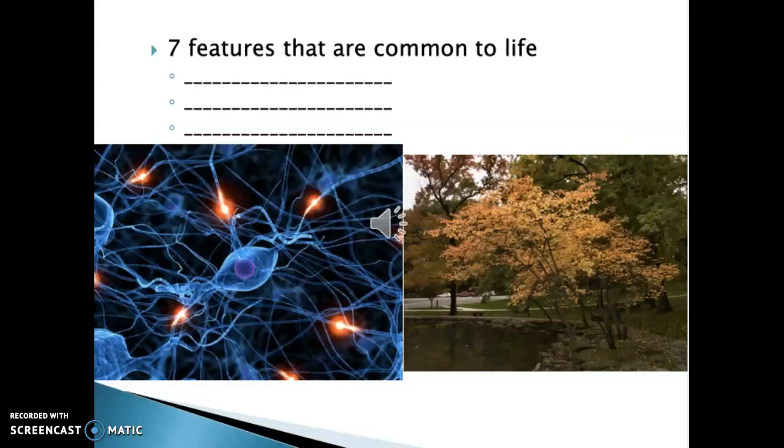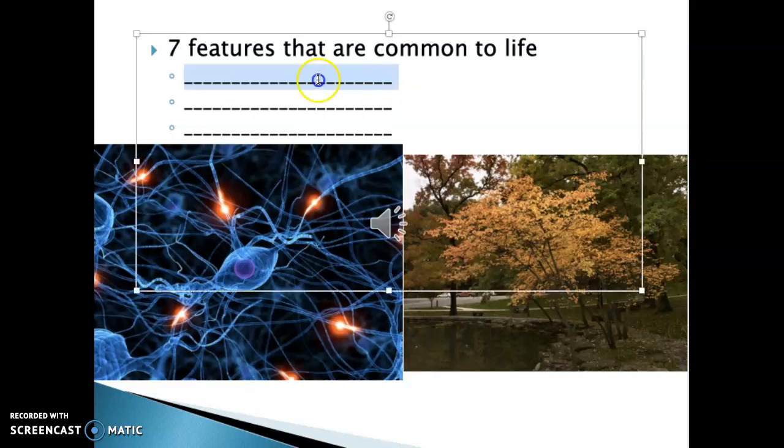What is life, or how do we know it's alive? Well, in general, we use seven key features that are common to life. All life has different, unique attributes. That's what makes some things different than others. But to be considered living, you tend to have to have these key features. That's what we want to discuss here and explore.